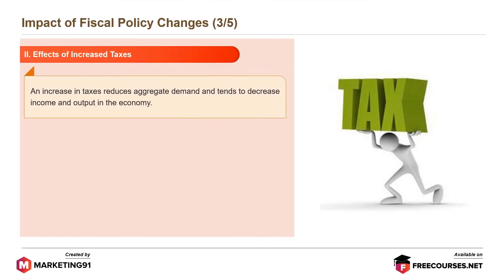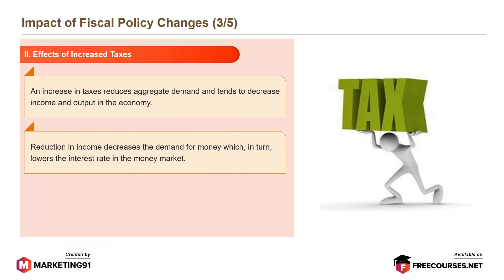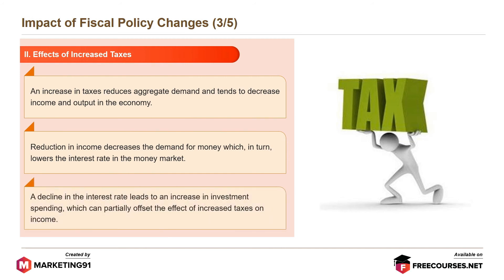Next are the effects of increased taxes. An increase in taxes reduces aggregate demand and tends to decrease income and output in the economy. Reduction in income decreases the demand for money, which in turn lowers the interest rate in the money market. A decline in the interest rate leads to an increase in investment spending, which can partially offset the effect of increased taxes on income.